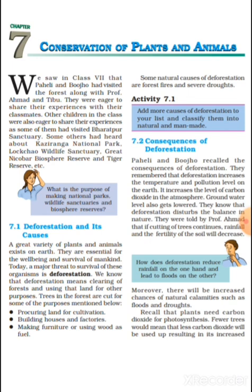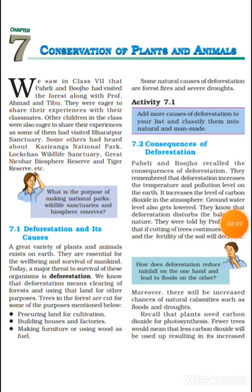Deforestation and its causes — Vanon ka moolan evam iske karan. A great variety of plants and animals exist on earth. They are essential for the well-being and survival of mankind. Hamari prithvi par nana prakar ke paudhe evam jantu paaye jaate hain. Yeh manav jaati ke astitva evam bhali prakar se rehne ke liye avashyak hote hain.